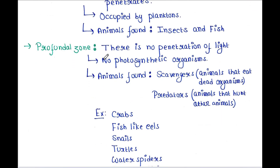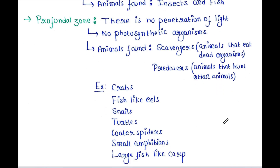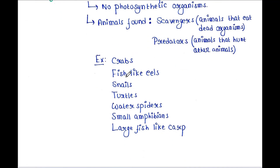Next is the profundal zone. There is no penetration of light, and no photosynthetic organisms are found here. Animals in this zone are scavengers and predators. Scavengers are animals that eat dead organisms, while predators hunt other animals. Examples include crabs, eels, snails, turtles, water spiders, small amphibians, and large fish like carp.